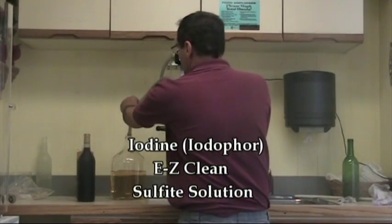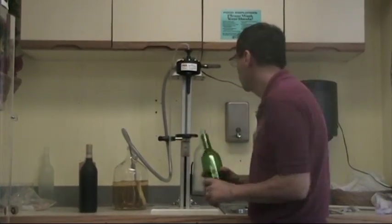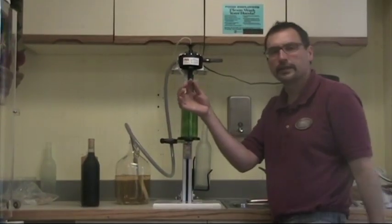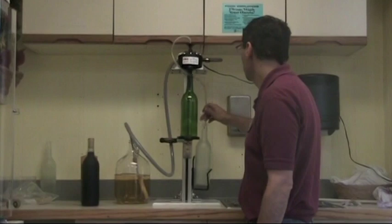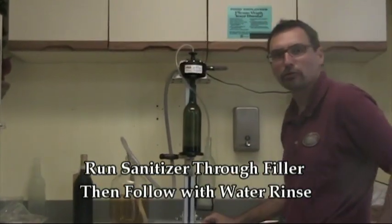So we'll put our hose down into our sanitizing solution, have a nice empty bottle to use for this purpose, and then also, again, you want to make sure that you run the sanitizer through your overflow hose, and that just goes down into our little collecting bottle, and we'll go ahead and just run the sanitizer through the bottle.